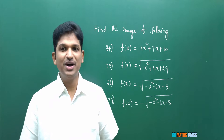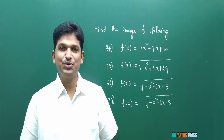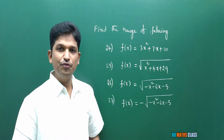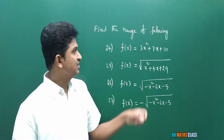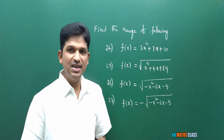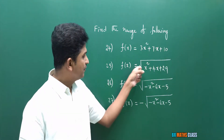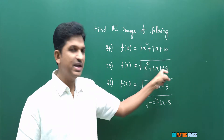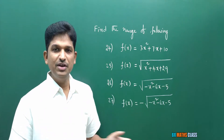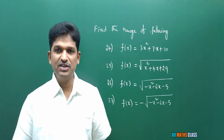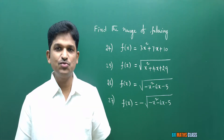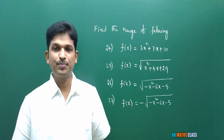we are going to do another 4 problems related to range of a function. If you observe all 4 functions, the function is in the form of AX square plus BX plus C, or the function is in the form of root over AX square plus BX plus C. When the given function is of this form, then how to calculate its range? That is what we are going to learn in this class.